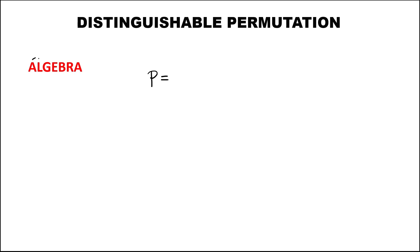For this next given word, again to find the distinguishable permutation, we count all the letters: 1, 2, 3, 4, 5, 6, 7 — so this is 7 factorial, then over — list all the repeated letters.